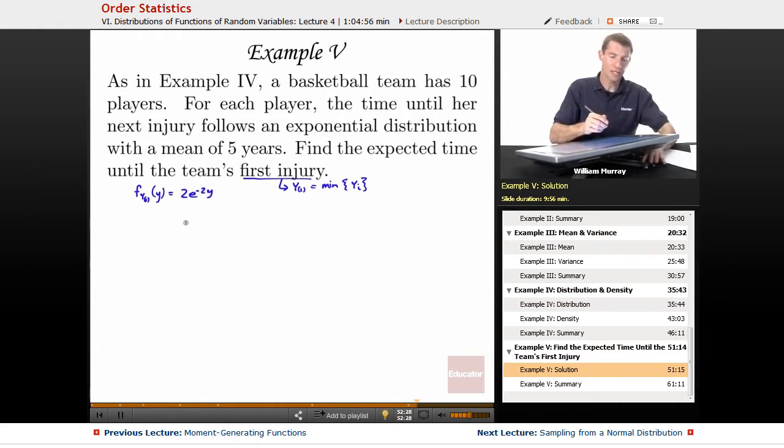So, 2e to the negative 2y, that's the density function for y sub 1, and that came from quite a bit of work in Example 4. I'm not going to repeat that, but if you think that's coming out of left field—I'm mixing my sports metaphors, this is a basketball team so nothing should come out of left field—go back and look at Example 4 and that should all make sense to you.